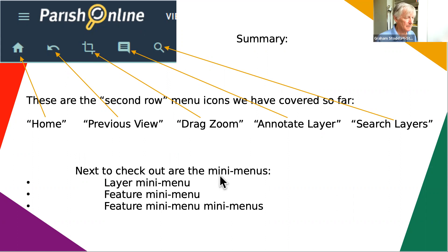There are mini menus in three areas: a mini menu that comes from clicking in the layers, another that comes from clicking on a feature, and there's also a mini menu to the mini menu.